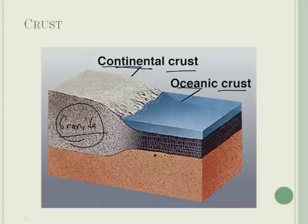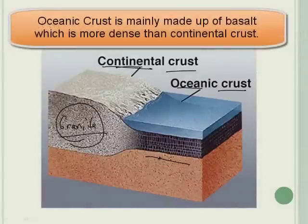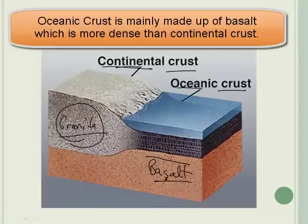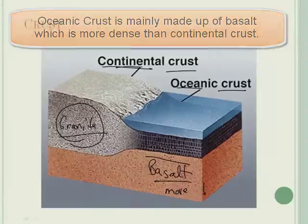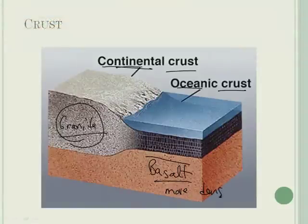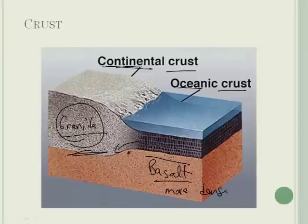The oceanic crust, which is the crust underneath the ocean, is primarily made of basalt. Basalt is more dense than granite. And because of that, the oceanic crust can actually go underneath the continental crust — we'll see how that applies later on.